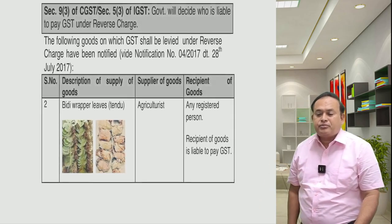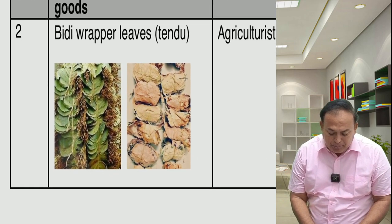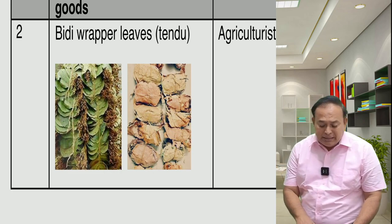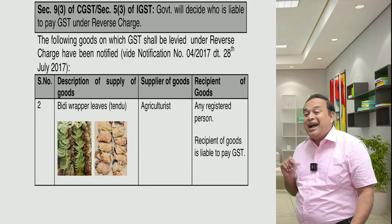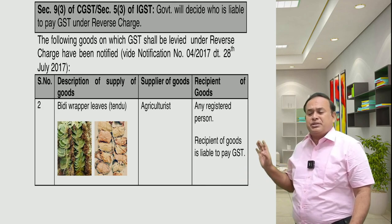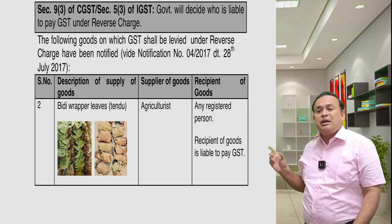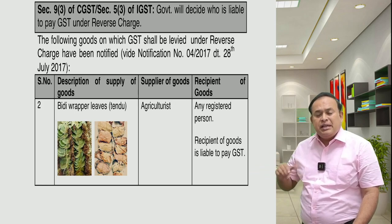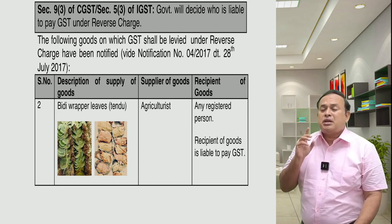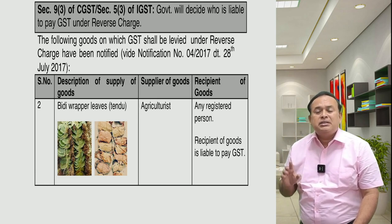Second in the reverse charge category: beedi wrapper leaves, also called tendu leaves. The supplier of these goods must be an agriculturalist, and the recipient should be a registered person under GST. The recipient is liable to pay GST under the reverse charge mechanism — same condition as cashew nuts: supplier must be an agriculturalist and recipient a registered person.